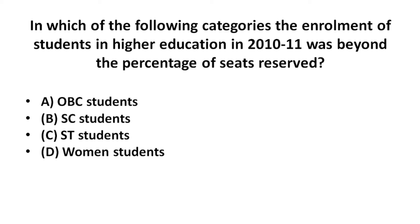The first question is: in which of the following categories was the enrollment of students in higher education in 2010-11 beyond the percentage of state reserve? The categories are SC students, ST students, and Women students. Remember that in 2010-11 the highest enrollment was the SC (Scheduled Caste) students — the obvious students.